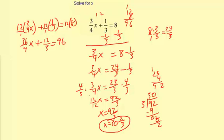Let's simplify. 36 divided by 4 is 9. So it's going to be 9x plus 12 divided by 3, which is 4, equals 96.